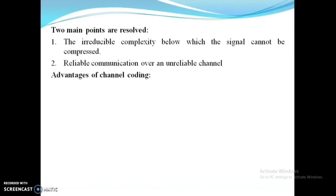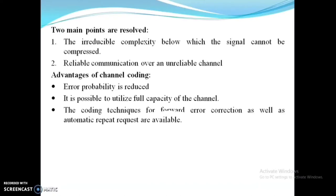There are three advantages of channel coding. First, the probability of error is reduced. Second, it is possible to utilize the full capacity of the channel. Third, coding techniques for forward error correction as well as automatic repeat requests are available. Even before transmission to the channel, if an error is detected at the encoder, an automatic repeat request is generated to the source for re-transmitting the information. Hence, correction is possible at the earlier stage itself.